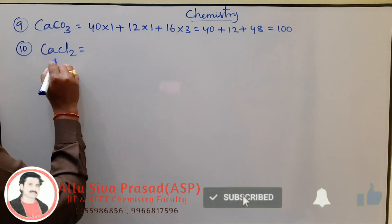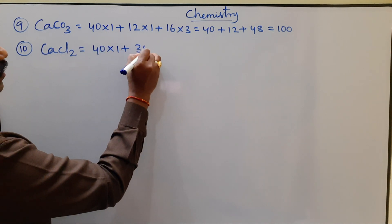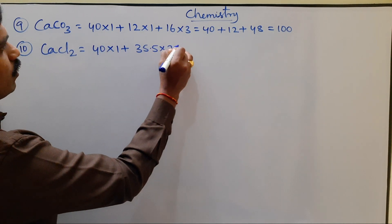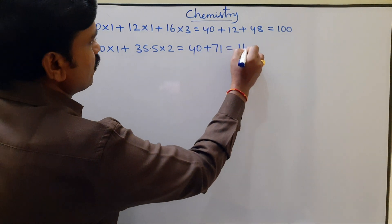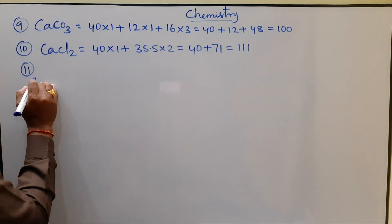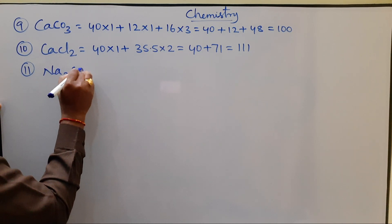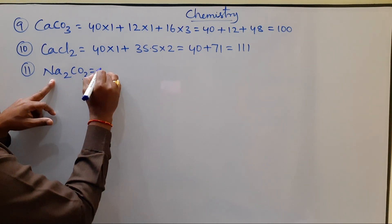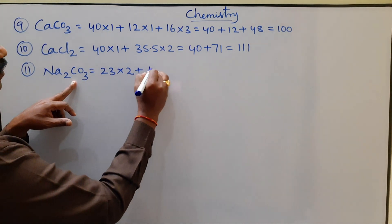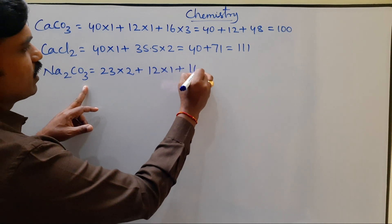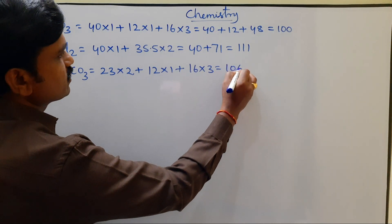Calcium Chloride, CaCl2. Calcium atomic weight 40 × 1, plus Chlorine atomic weight 35.5 × 2. That equals 40 plus 71, which is 111. Next, Sodium Carbonate, chemical formula Na2CO3. Two atoms of sodium: Sodium atomic weight 23 × 2, plus Carbon atomic weight 12 × 1, plus Oxygen atomic weight 16 × 3. Total equals 106.